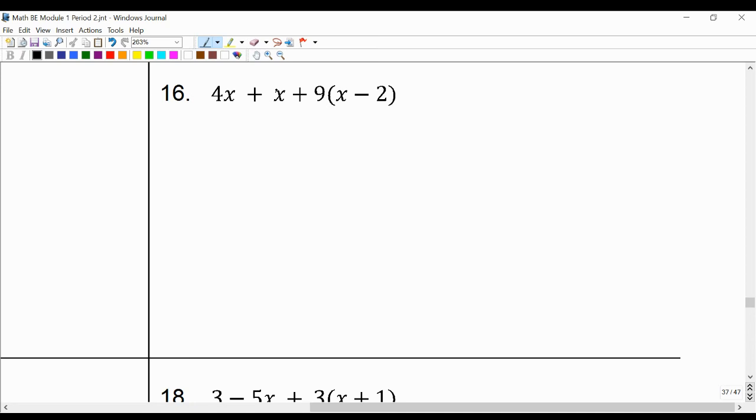We're going to simplify 4x plus 1x plus 9 times the quantity x minus 2. First step is, we'll include that ghost 1 and we'll include our sign change.